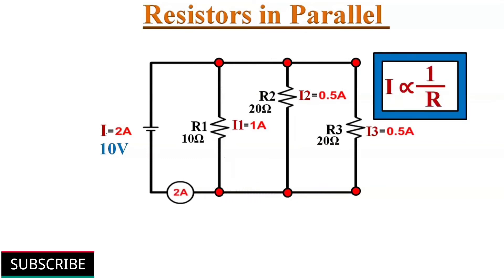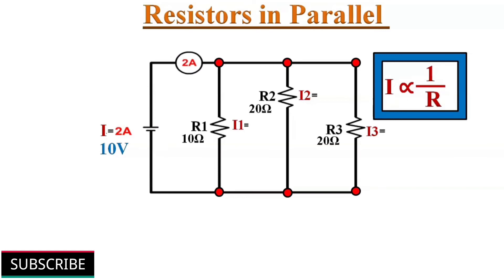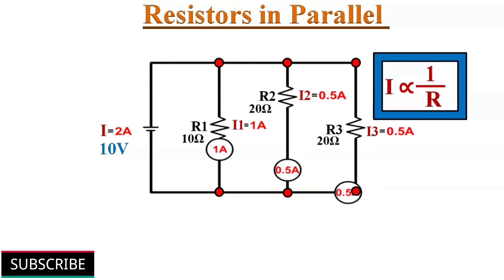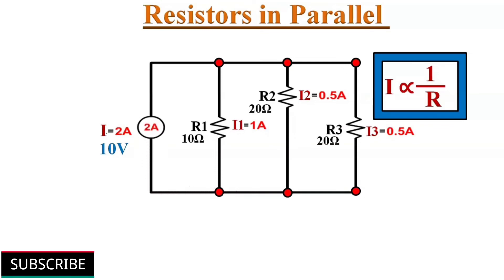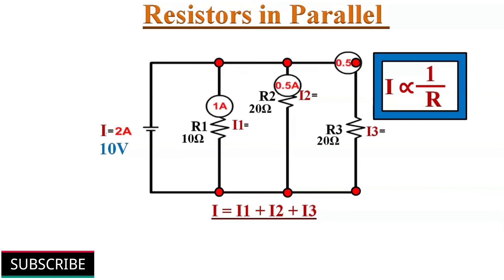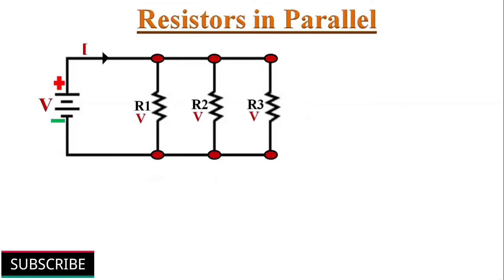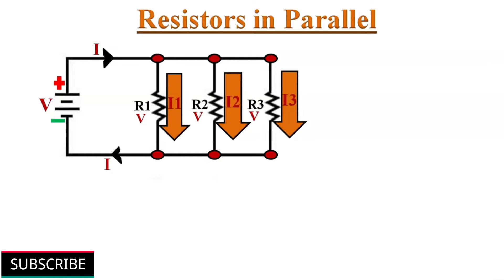According to Ohm's law, the flow of current is inversely proportional to resistance. So the higher the resistance of a branch, the lower the current through that branch. Here R1 has the lowest resistance value of 10 ohms, so the current flowing through R1 is higher than the other branches. The total source current I equals I1 plus I2 plus I3, so parallel circuits are also classed as current dividers. Here we can apply Kirchhoff's current law: the total current entering a junction is exactly equal to the total current leaving the same junction, so I equals I1 plus I2 plus I3.